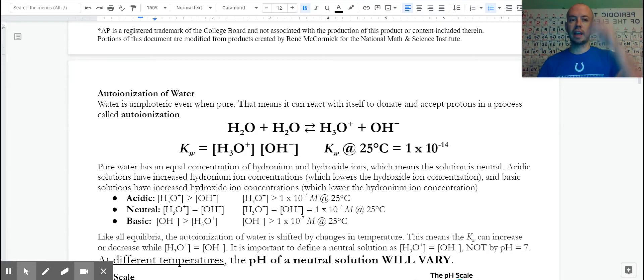The specific K expression for that we call KW and it has an important and known value of 1 times 10 to the negative 14th. And this is important that it's at 25 degrees Celsius. And you'll see that several times throughout here as a reminder that when we change temperature, that shifts our equilibrium and changes the K value. Not only do we get more reactants or products, but we also change the value of K.